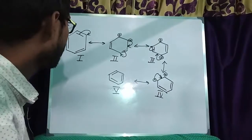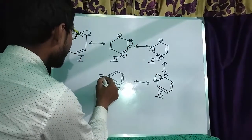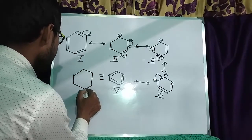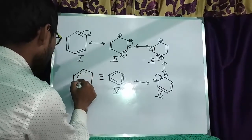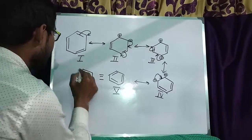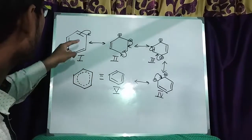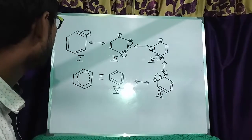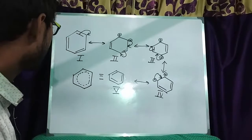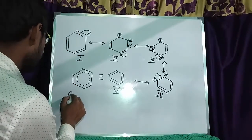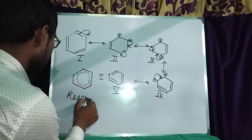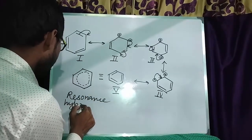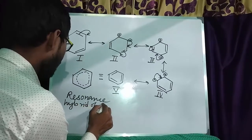And from this, now I can draw the resonance hybrid here. Like this. This indicates that all double bonds have been migrated in the benzene ring. And this is called the resonance hybrid of benzene.